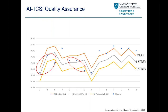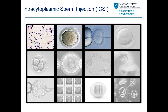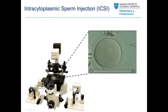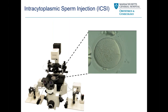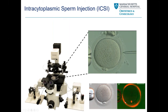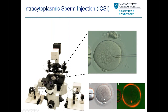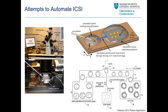ICSI is another procedure performed on day zero that requires a lot of visual assessments. We generally line up the extruded polar body at six o'clock — or sometimes noon — to avoid damaging the metaphase two plate, which is adjacent to the polar body. There have been several attempts to automate ICSI, because it's a highly technical procedure requiring lengthy training to maintain proficiency, and some labs are now exceeding 90% ICSI utilization. The problem with some automation attempts was they had no visual cues when lining eggs for ICSI.